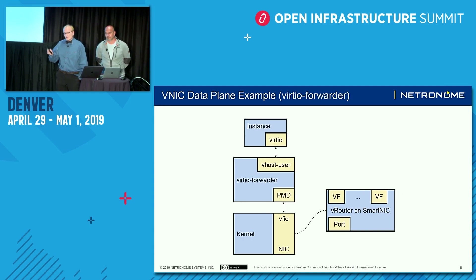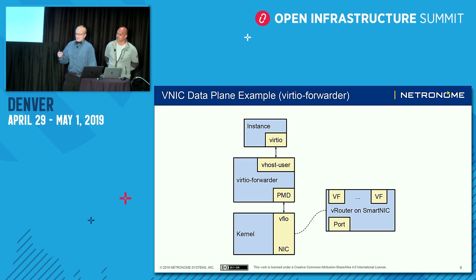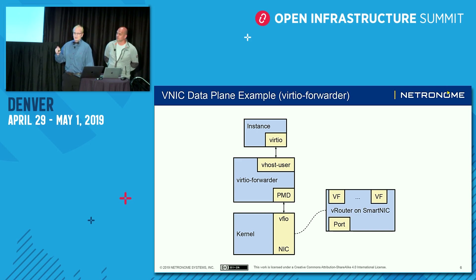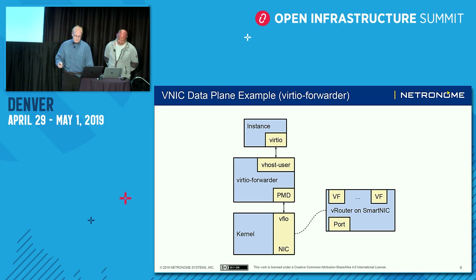Finally, the virtual forwarder case is kind of a mix between the two. The data plane is running entirely on the NIC, but you have a small, low-latency forwarder in user space that ensures that packets can get to the virtual machines, and it's always under a VIO interface.